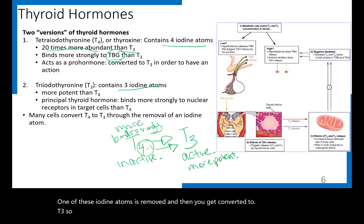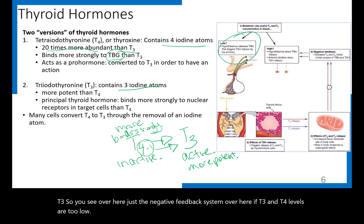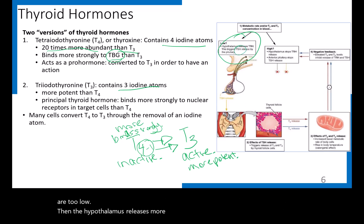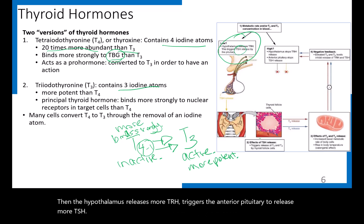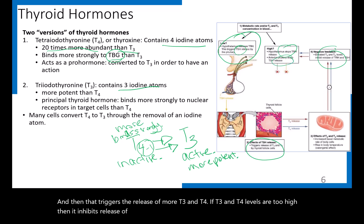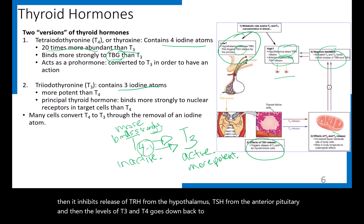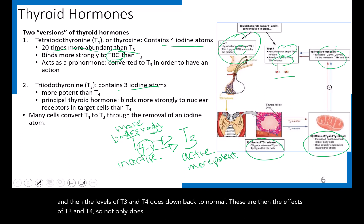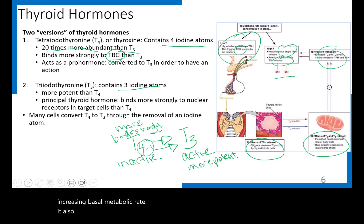If T3 and T4 levels are too low, the hypothalamus releases more TRH, triggering the anterior pituitary to release more TSH, which triggers release of more T3 and T4. If T3 and T4 levels are too high, it inhibits TRH from the hypothalamus and TSH from the anterior pituitary, bringing levels back to normal. The effects of T3 and T4 include increasing basal metabolic rate and producing heat as a byproduct of metabolic reactions.